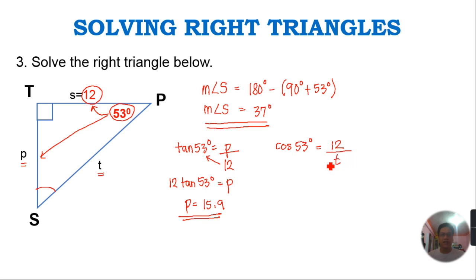We just cross multiply, so this will be T times cosine 53 degrees equals 12. Since we are looking for the value of T, we just divide both sides by cosine 53 degrees because we want to isolate the variable T. So T equals 12 over cosine 53 degrees. Input that in your calculator, so our value for T will be 19.9, rounded to one decimal place.